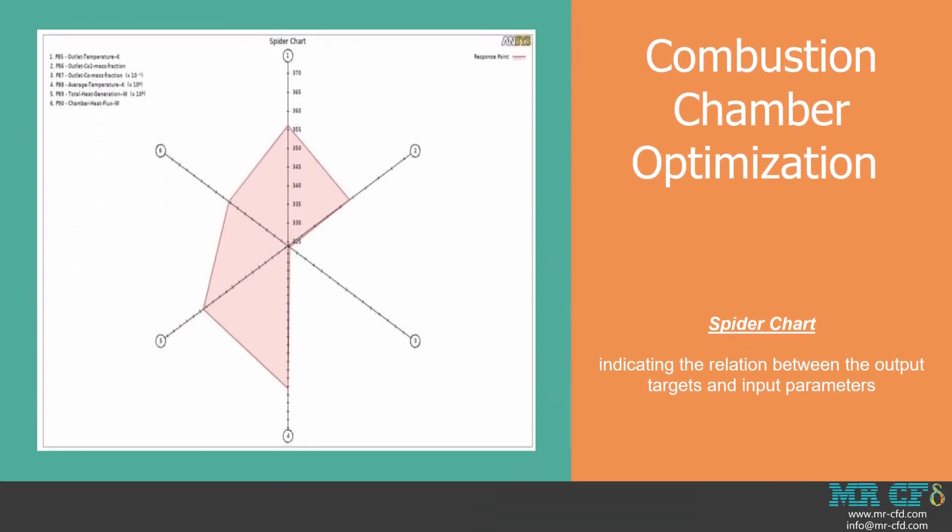Finally, in the spider chart, you can observe the responses for each parameter. For example, when we have the highest value for parameter one or outlet temperature, two outlet CO2 mass fraction, four average temperature, five total heat generation, and six chamber heat flux, parameter three outlet CO mass fraction will have its least value, which is entirely logical, since when we have a complete stoichiometric reaction, the generated heat will reach its highest value, while the mass fraction of CO will reach zero.